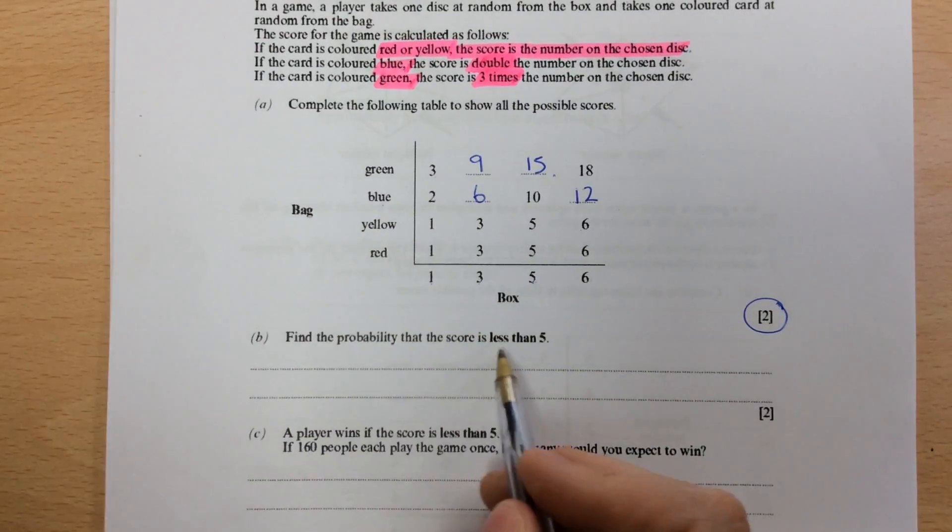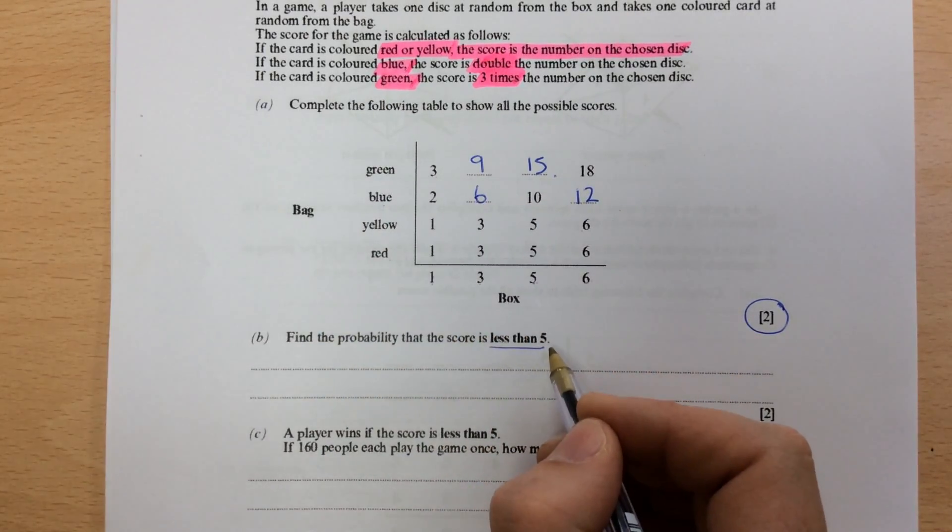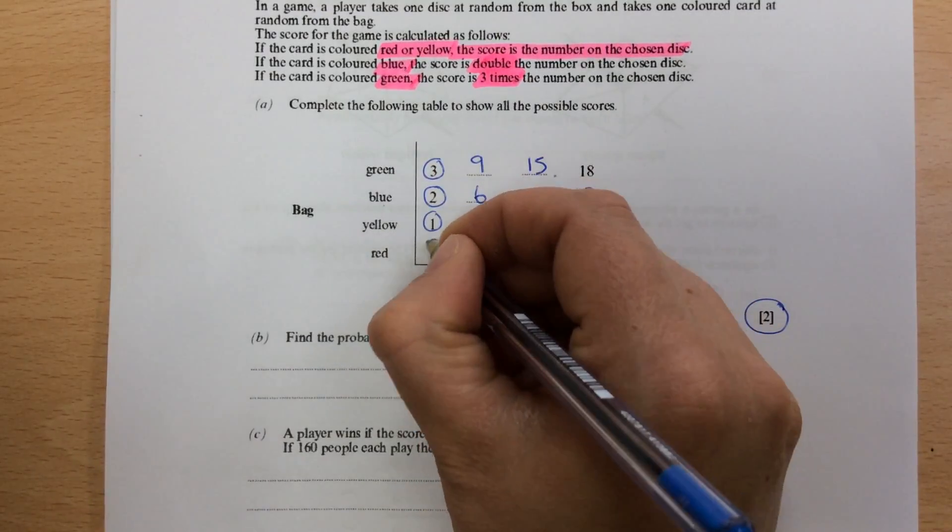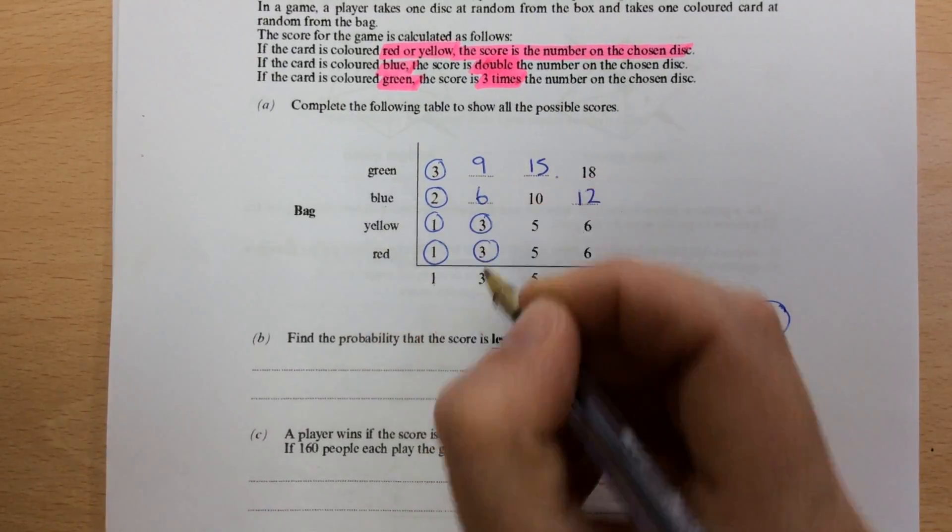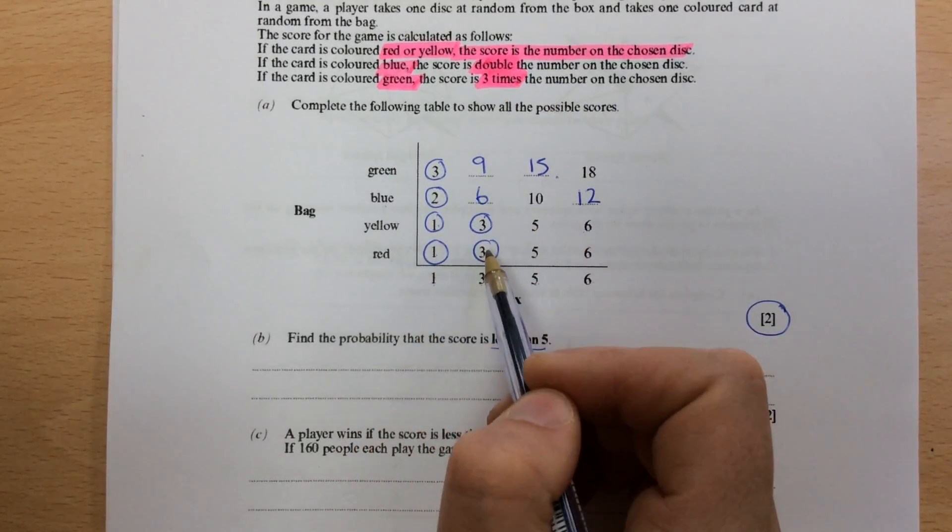Now find the probability the score is less than five. So you've got to make sure you get all the numbers less than five, but not five. So three is less, two, one, one, three, and three, and no more. So I've got one, two, three, four, five, six.